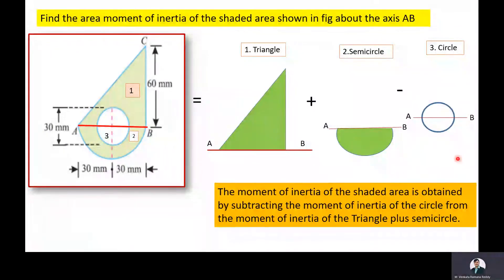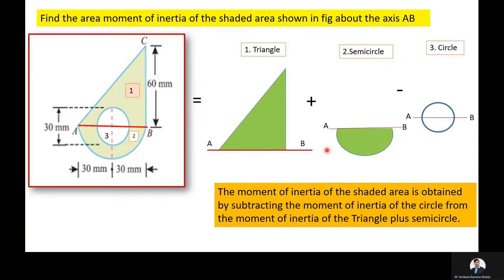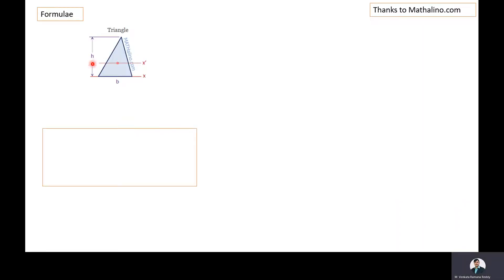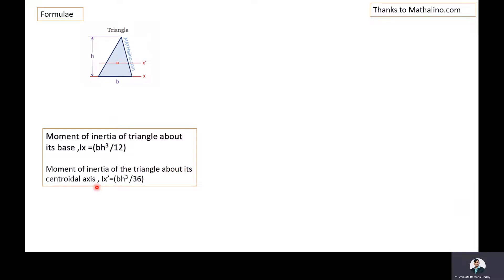Next, we will revise the formulas used for finding the moment of inertia of a triangle, semicircle, and circle about the axis AB. The moment of inertia of a triangle about its base is IX = BH³/12, where B is the base and H is the height. The moment of inertia of a triangle about its centroidal axis is BH³/36. In the present problem, we will use IX = BH³/12.